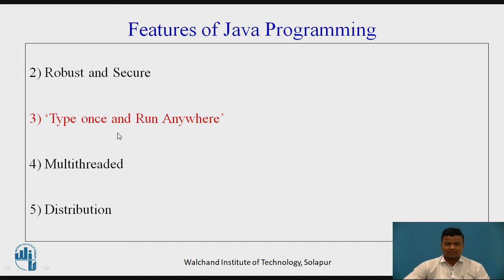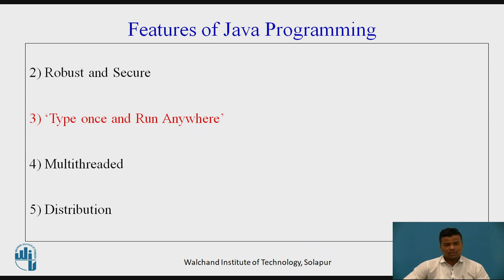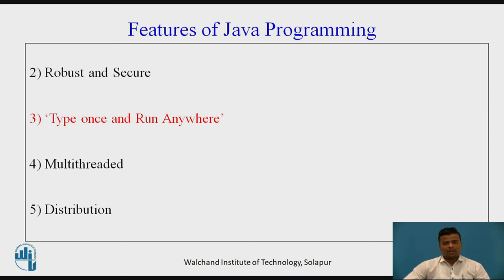Multi-threaded means multitasking. Java programming is a multi-threaded language. For example, a web page consists of text, sentences, pictures — you can scroll the page, share images, and listen to songs simultaneously, meaning one page has multi-threading or multitasking. Distribution: Java programming software can be distributed very easily; we can distribute input and output from one center to another center.